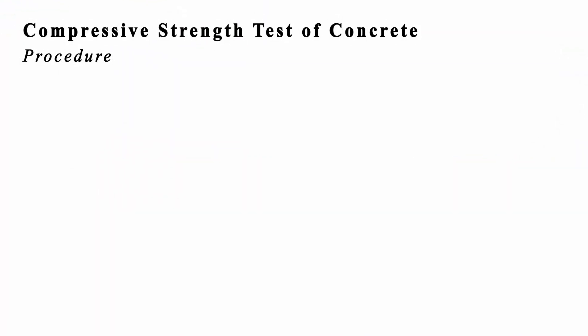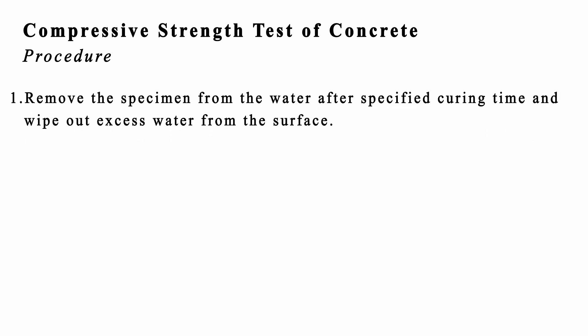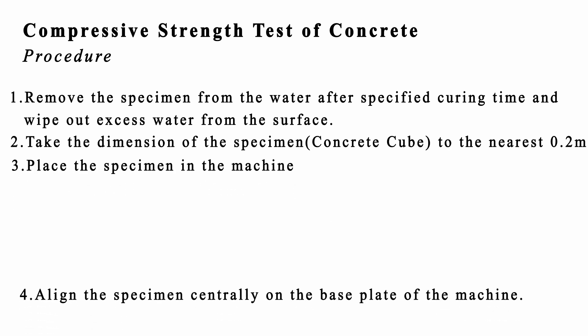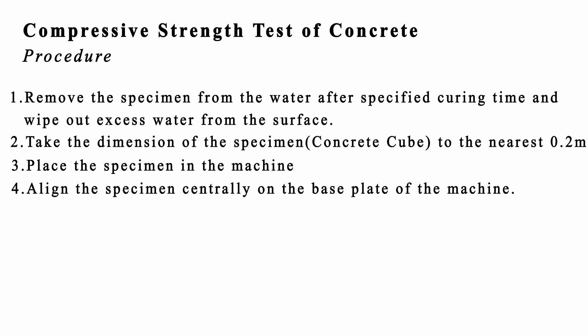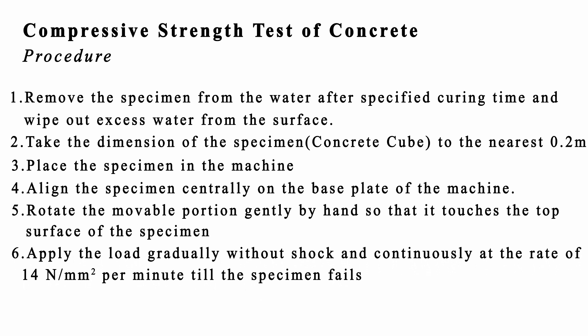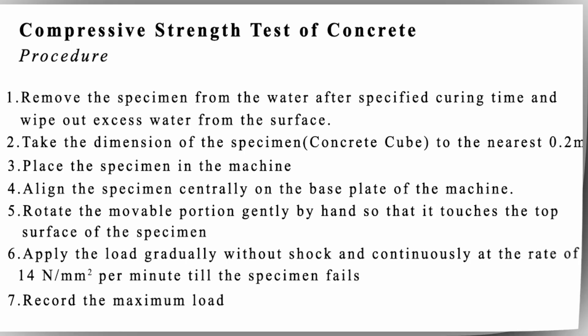Compressive Strength Test of Concrete Procedure: 1. Remove the specimen from water after the specified curing time and wipe out excess water from the surface. 2. Take the dimension of the specimen concrete cube to the nearest 0.2 mm. 3. Place the specimen in the machine. 4. Align the specimen centrally on the base plate. 5. Rotate the movable portion gently by hand so that it touches the top surface of the specimen. 6. Apply the load gradually without shock and continuously at the rate of 14 N per mm² per minute until the specimen fails. 7. Record the maximum load.